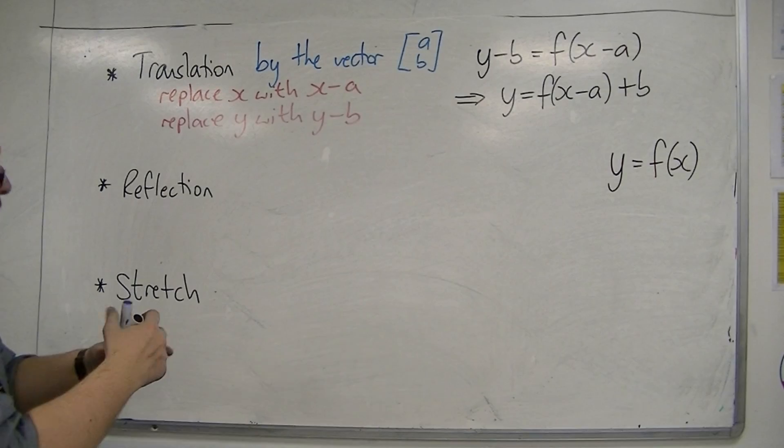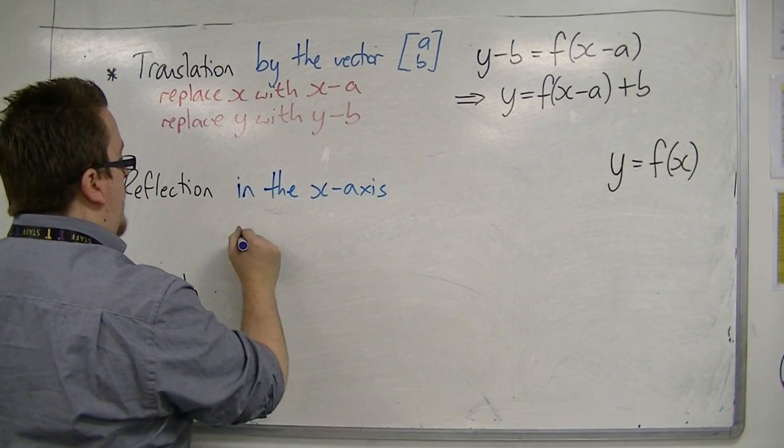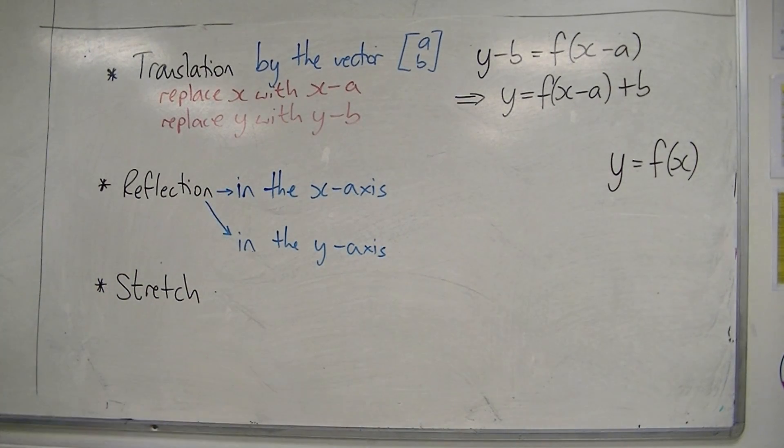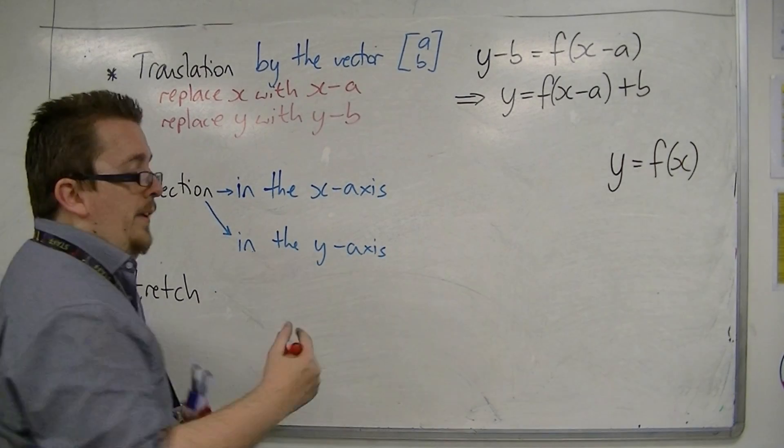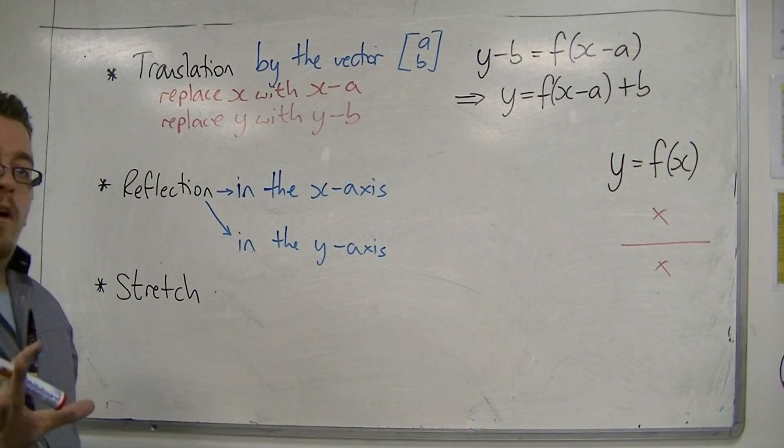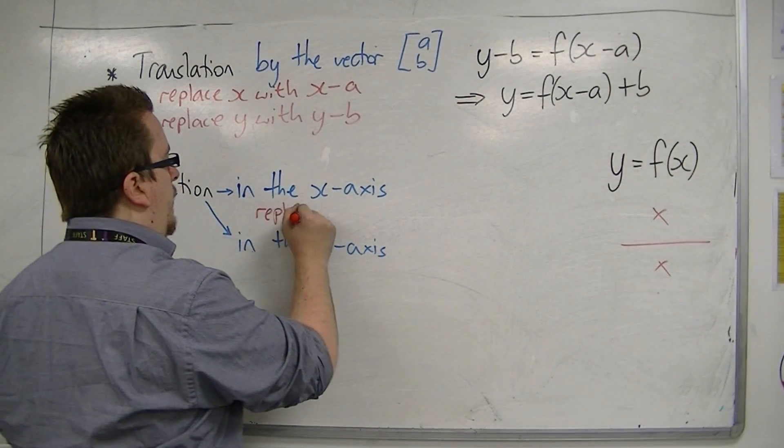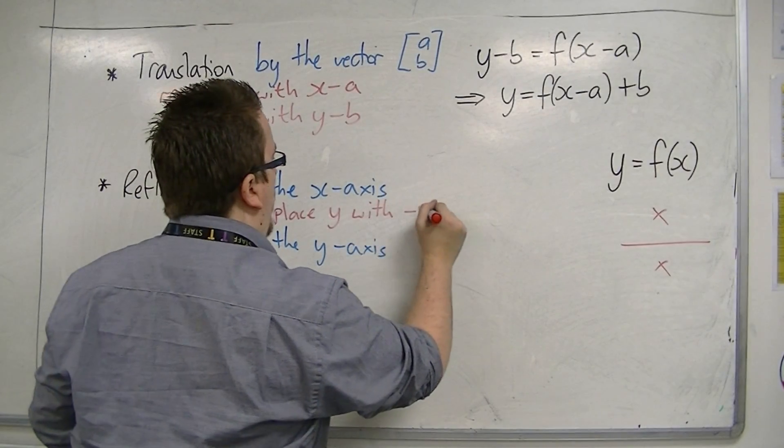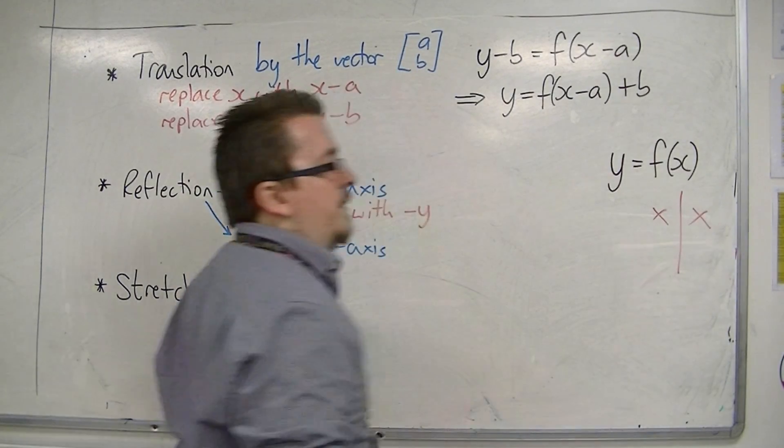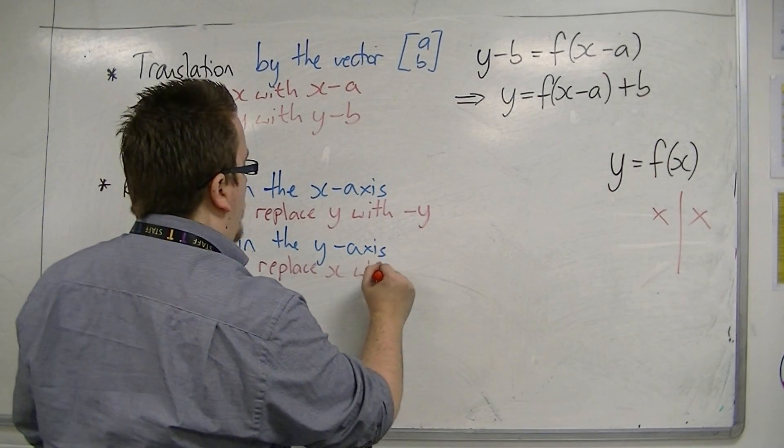Now reflection could be in the x-axis or it could be in the y-axis. If it was in the x-axis, then it was just the y-coordinate that was changing, so we replace y with minus y. And if it was in the y-axis, then it was the x-coordinate that was changing side, so you replace x with minus x.